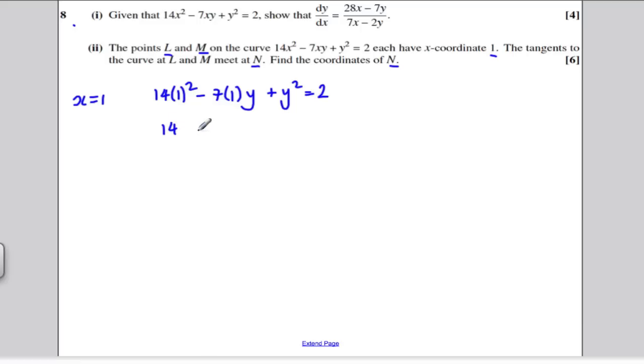that's 14 - 7y + y² = 2. I'm going to subtract 2 from both sides and reorder this so y² is first, then -7y, then the number. So doing that all in one move, y² - 7y + 12 = 0.